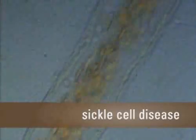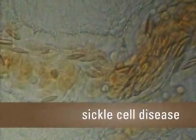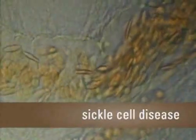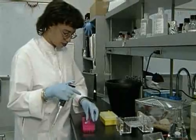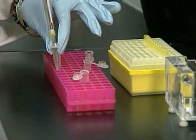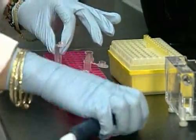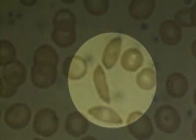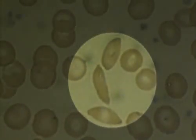Sickle cell disease is an inherited disease that mainly affects people of African descent. Some of the red blood cells of a person with sickle cell disease have an abnormal shape. Rather than being rounded, these red blood cells are shaped like a sickle or crescent. Because of their abnormal shape, sickle cells are easily trapped in blood vessels.